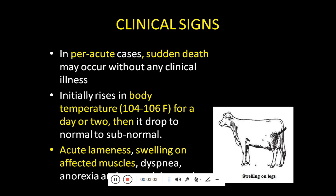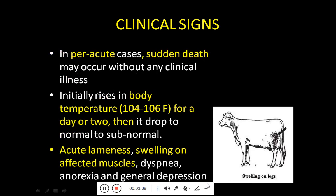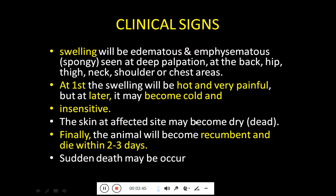Regarding clinical signs: in per-acute cases, sudden death of the animal without any prior clinical illness is seen. Initially there is a rise in body temperature from 104 to 106°F for a day or two, then it drops to normal and then subnormal. Acute lameness is seen, swelling develops on the affected muscle, the animal shows dyspnea, anorexia, and general depression. The animal keeps itself separate from the herd.